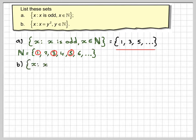For b, we've got x such that x is y squared and y belongs to N.